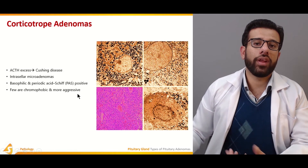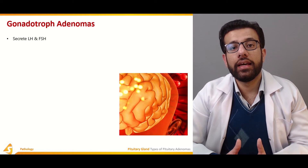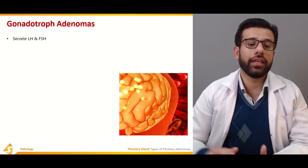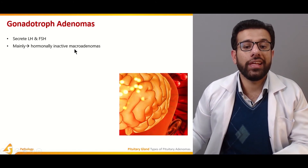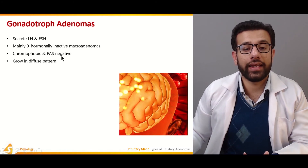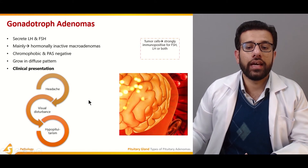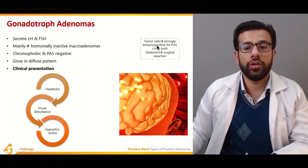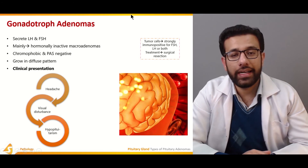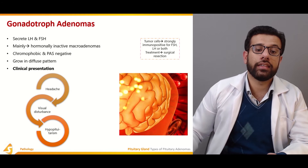The gonadotroph adenomas involve gonadotroph cells that release LH and FSH, hormones involved in the female menstrual cycle and pregnancy. These are mainly hormonally inactive macroadenomas that are chromophobic and PAS negative, growing in a diffuse pattern. Tumor cells are immunopositive for FSH, LH, or both, and treatment is surgical resection.